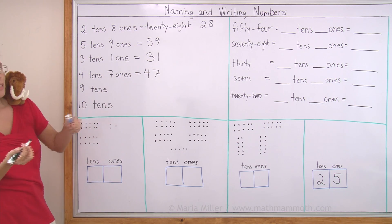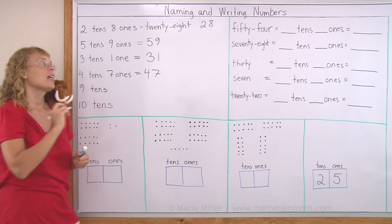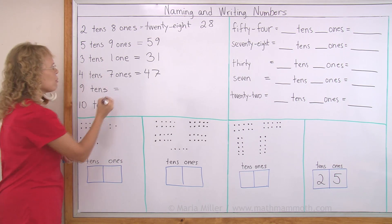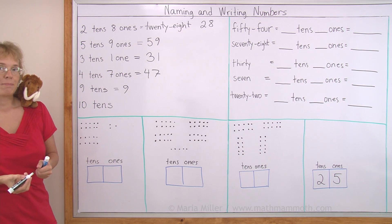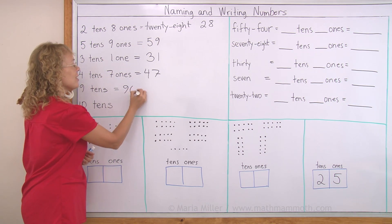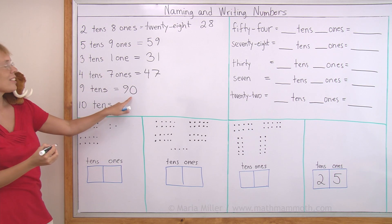9 tens, what's the name for 9 tens? 90, yes. And how would we write it? We can't just write 9. We have to write 9, 0. 9 tens, 0 ones.